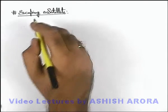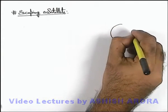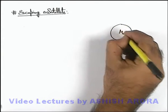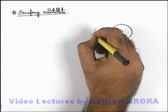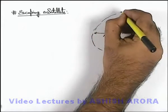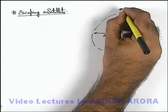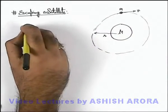Let us discuss the phenomena of escaping a satellite. Say if we are given with a planet which is of mass M and in an orbital radius r, a planet is revolving in a circular orbit. We have already discussed that if a planet of mass m revolves in a circular orbit, its orbital speed can be given as: